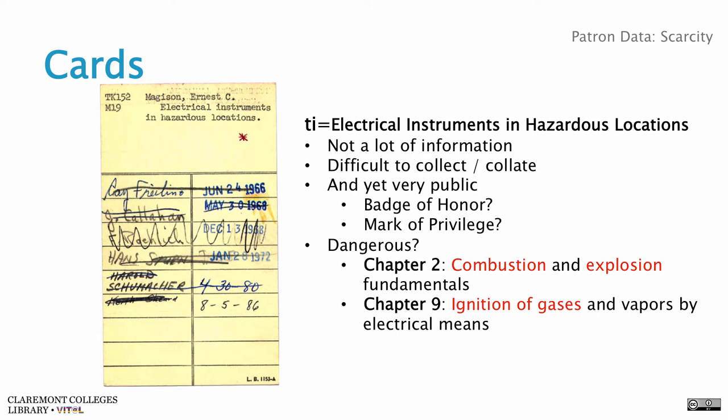Going back a ways, we also had cards — an interesting way to keep tabs on patrons. The cards would have people's names on them, scattered all throughout the building. That seems like kind of a privacy problem — glad we stopped doing that. This engineering book probably seemed perfectly safe to check out back in the 60s and 70s, and today might cause somebody real problems. Chapter 2 is about how to make explosives and Chapter 9 is how to ignite them with electrical devices.